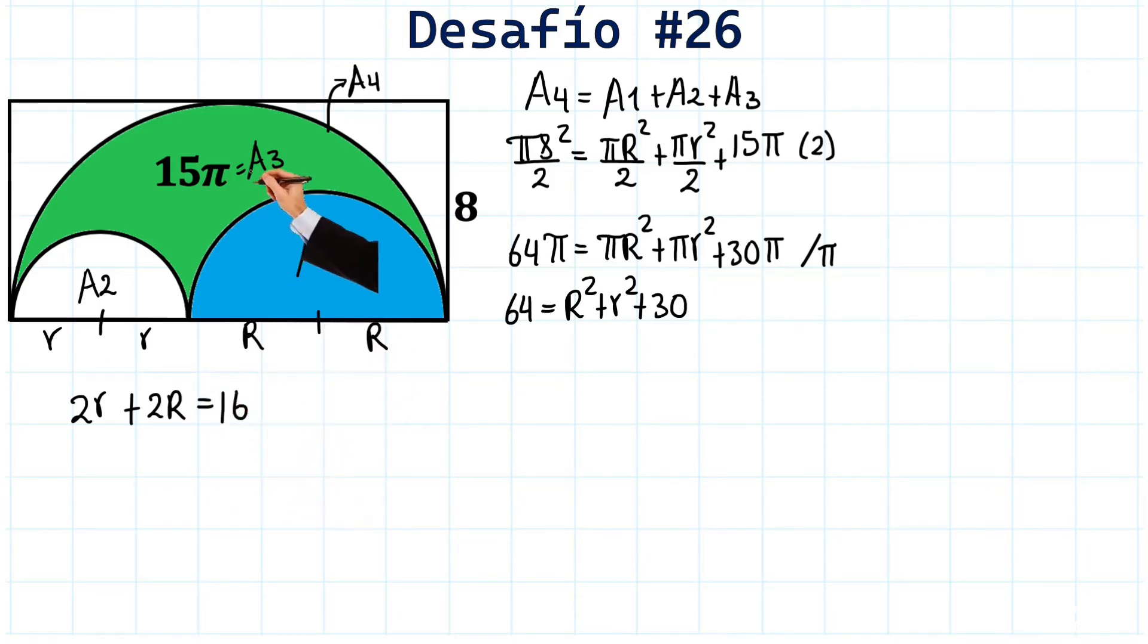How do we know? Because the radius of the large semicircle, notice this semicircle here is 8. And so, the diameter has to be 16. And this whole part here is the diameter. Very well.